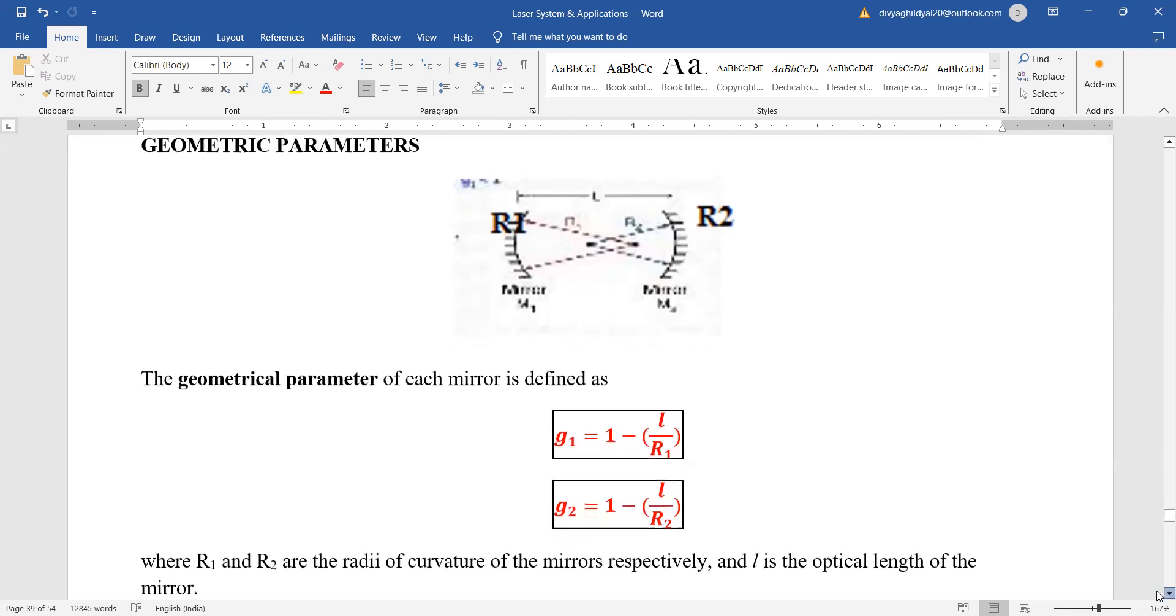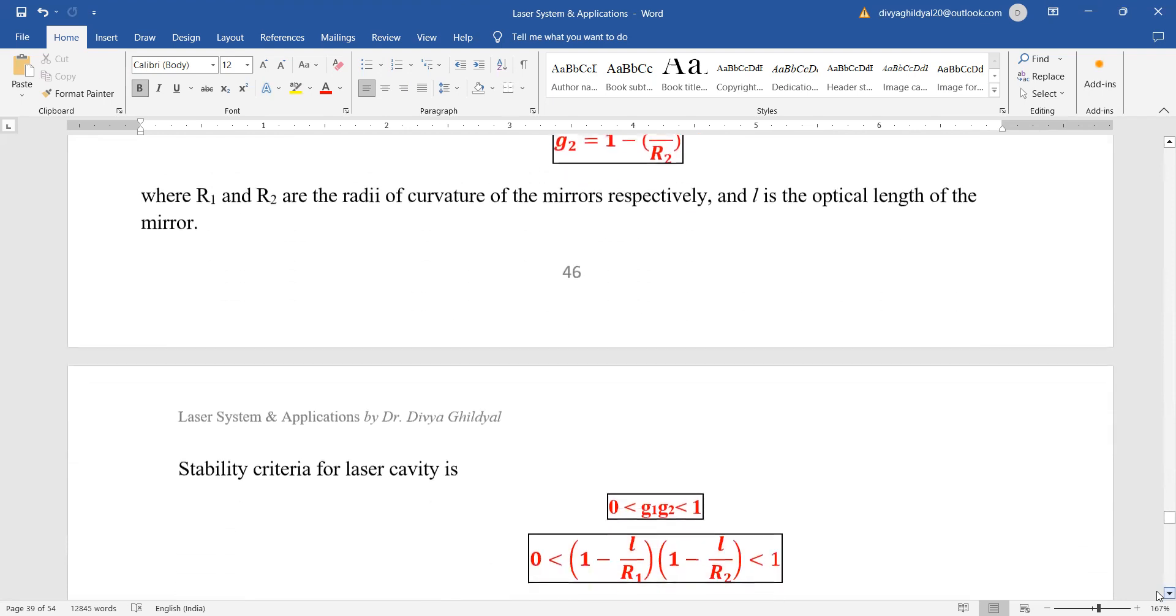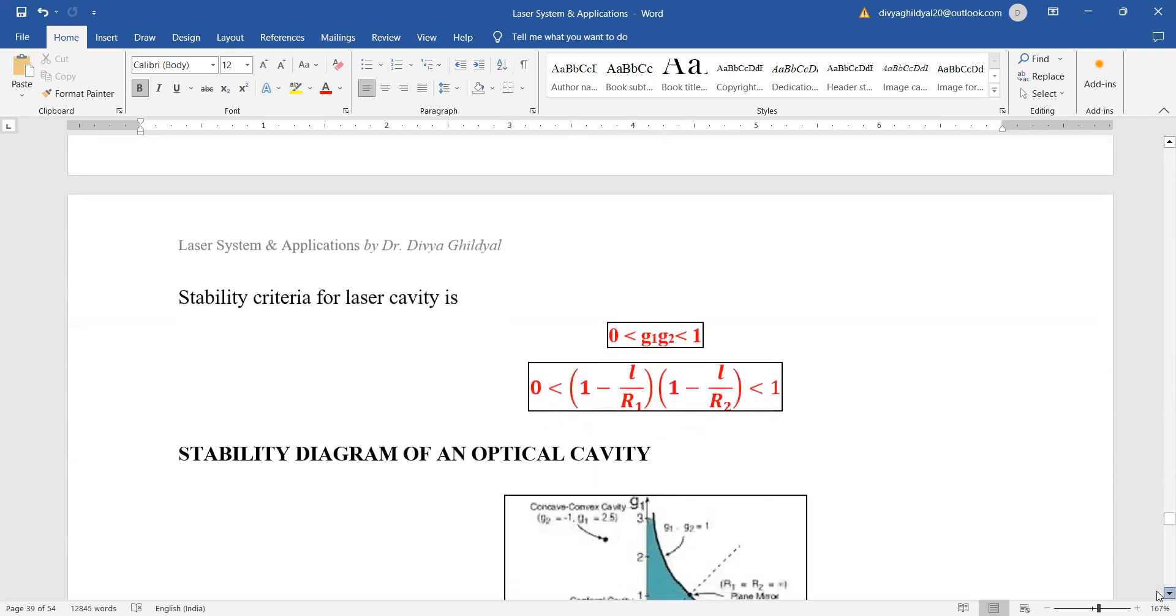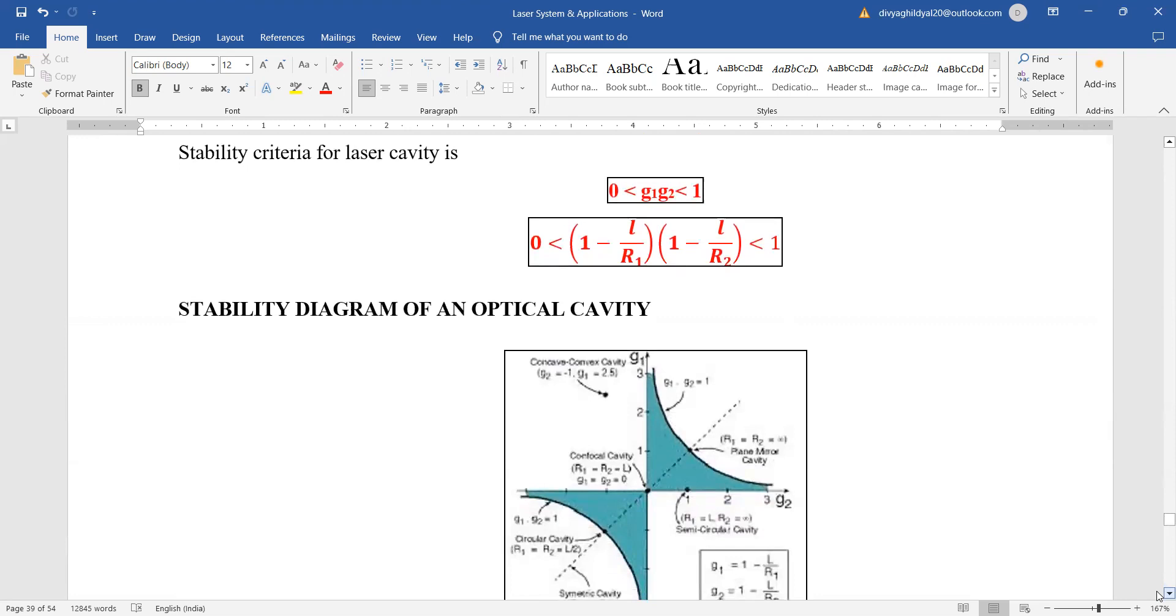r1 and r2 are the radii of curvature of the mirrors, l is the optical length. Stability criteria for laser cavity is that the multiple of g1 g2 should be less than 1 and greater than 0.